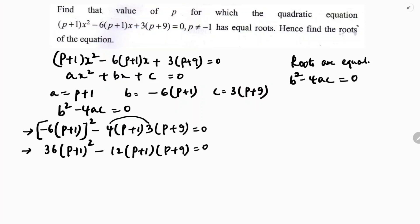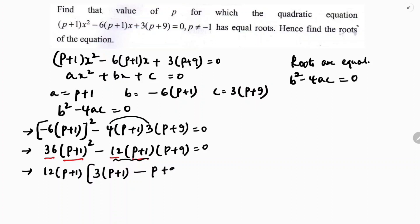Now in these two terms I can take 12 and (p+1) common. Taking 12(p+1) common: 12 times 3 is 36 so 3 is left from the first term, and (p+9) is left from the second term, giving 12(p+1)[3(p+1) - (p+9)] = 0.